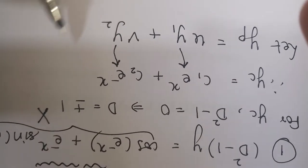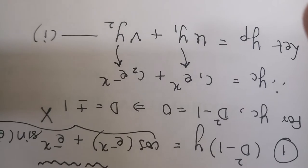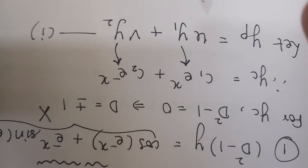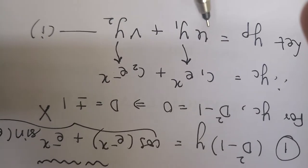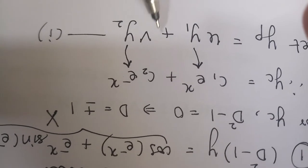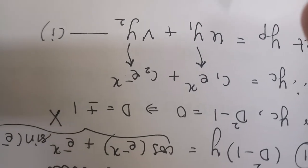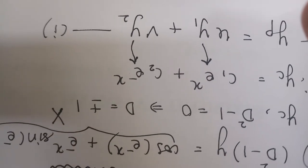Here y1 is e raised to x and y2 is e raised to minus x. The only thing that is left for us to find out is u and v. Now let us see how to find u and v.